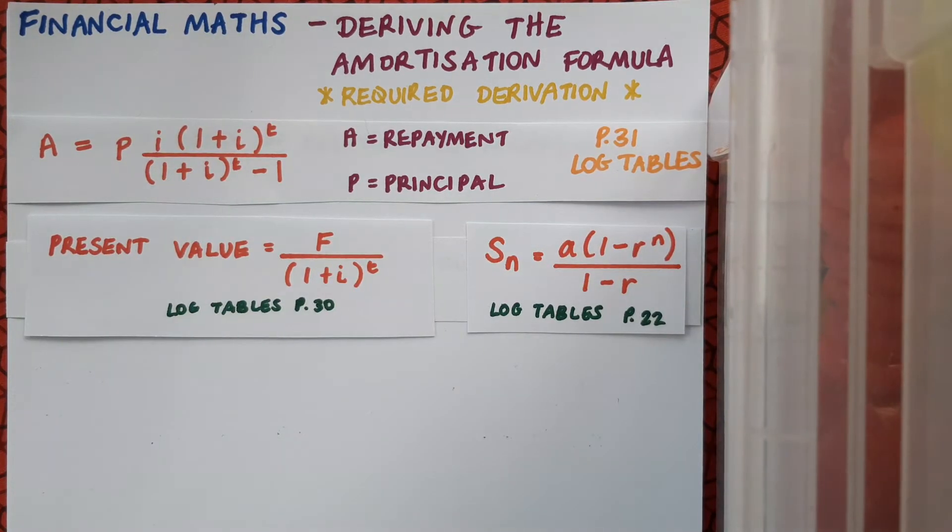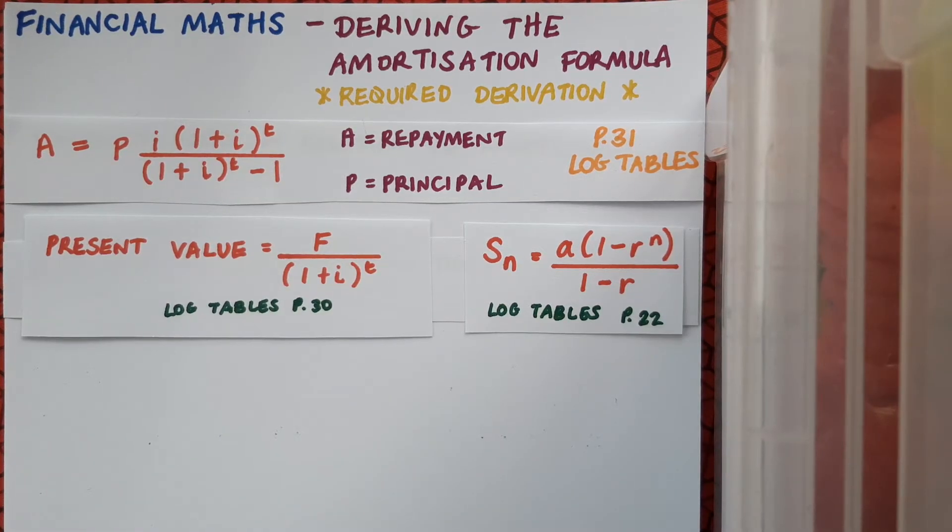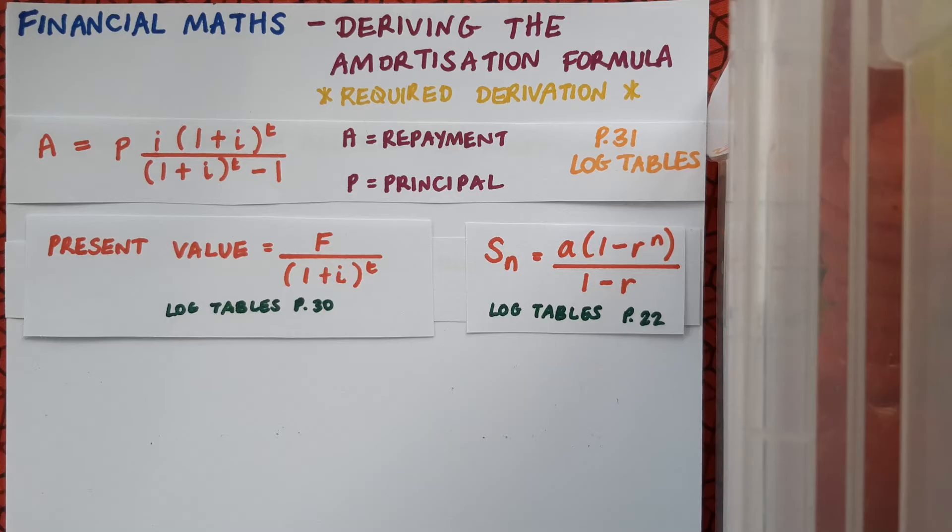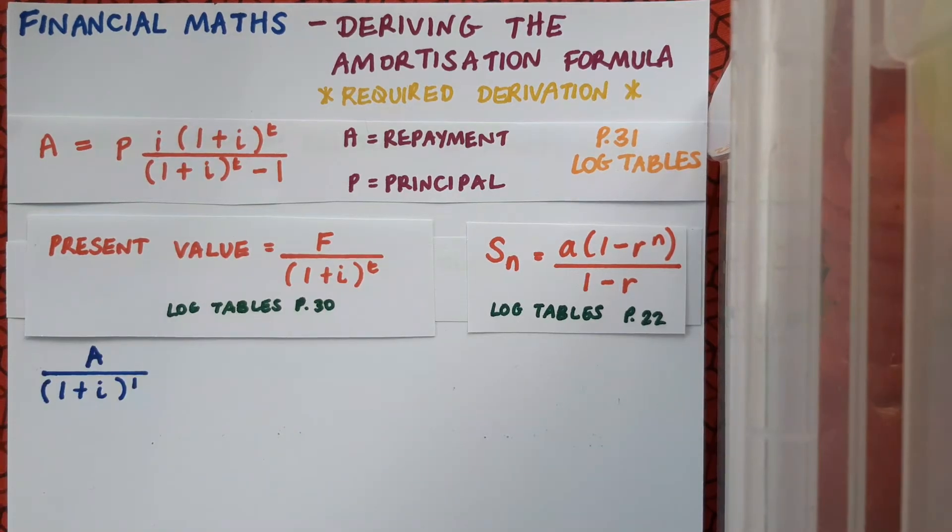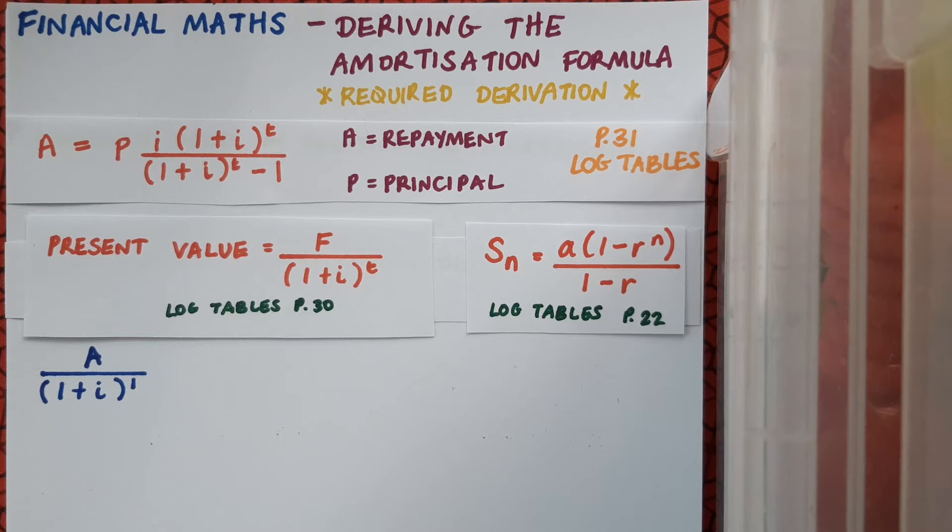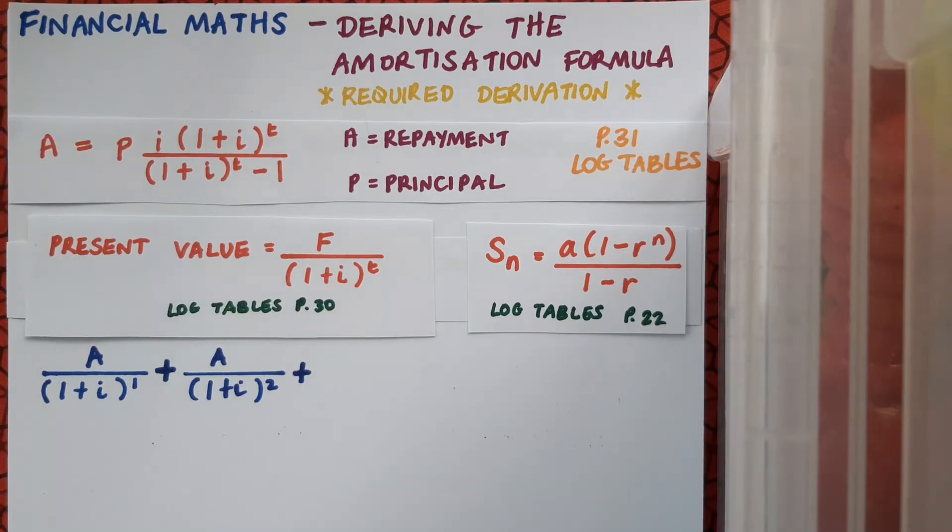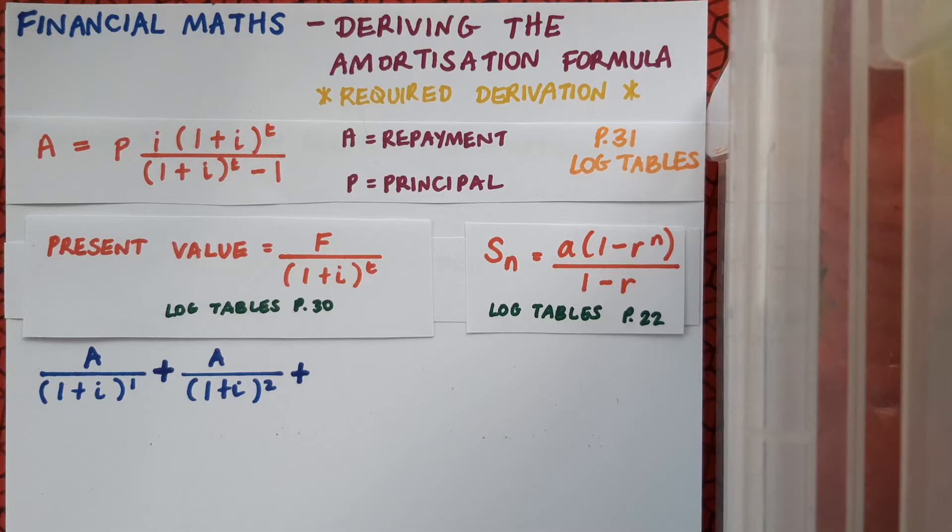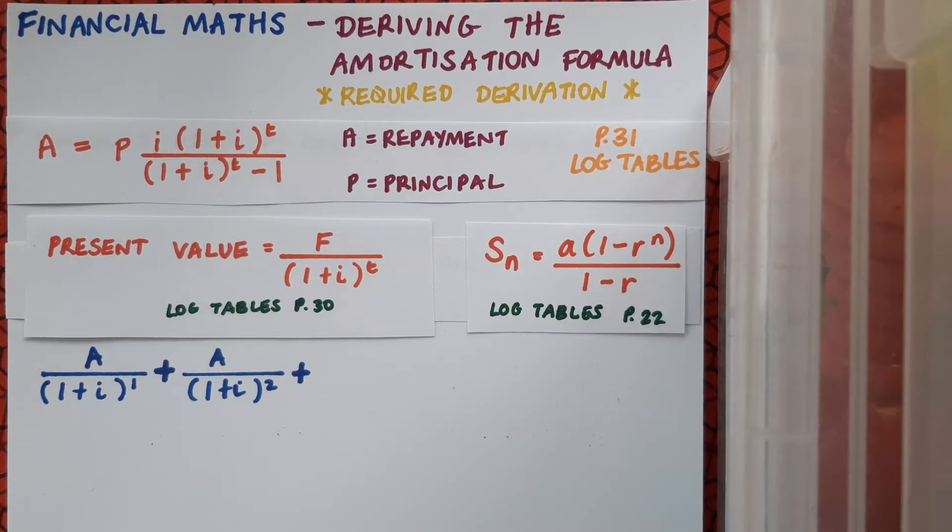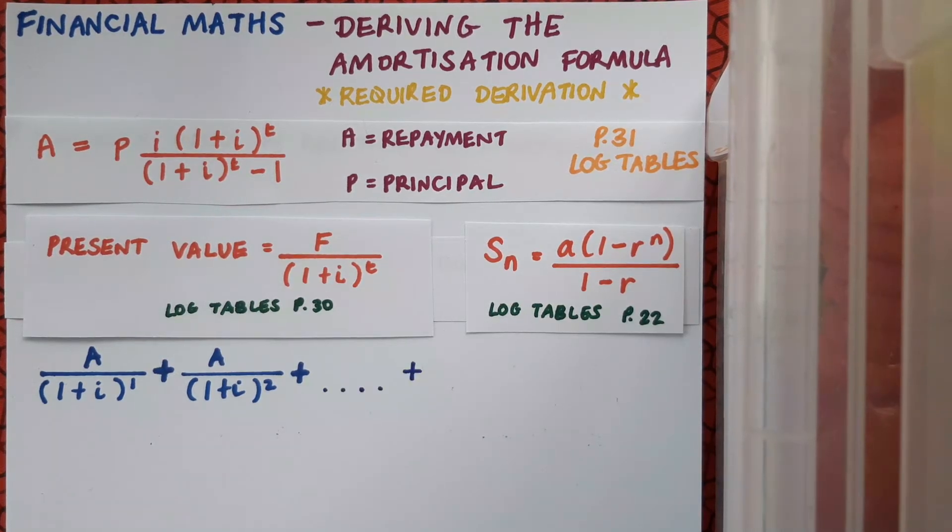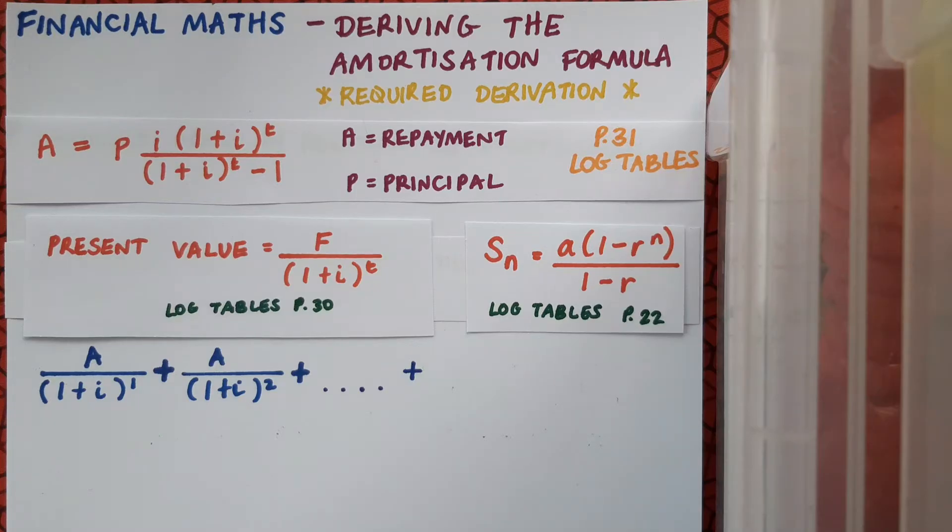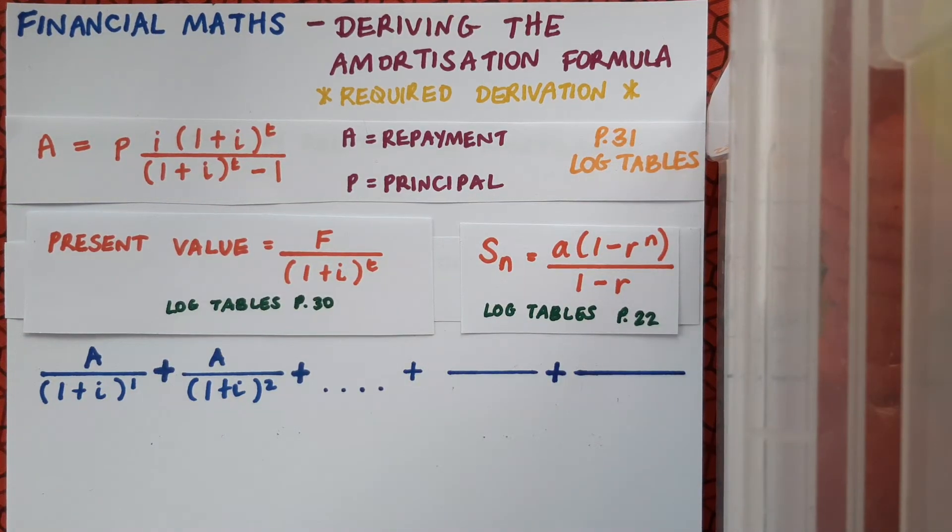Okay, so we're ready to go. The first repayment in a mortgage is generally made one month after the mortgage is drawn down, or the loan is taken out. We can write the present value of this repayment as A over 1 plus I to the power of 1. Our next repayment is made on the second month, and so we can write its present value as A over 1 plus I to the power of 2. And this continues on until the end of the loan. And as I go along, I'm adding these individual terms up then and letting them be equal to P. And I'm not going to write in every single individual term in this series. I'll do a dot dot dot to show that it goes on for some time, and then I'll fill in my last two terms. So pause the video here and do that yourself.